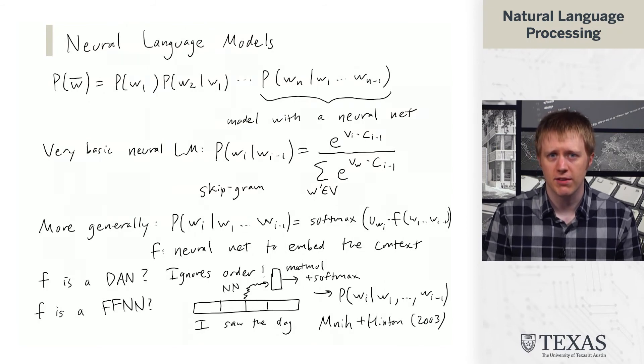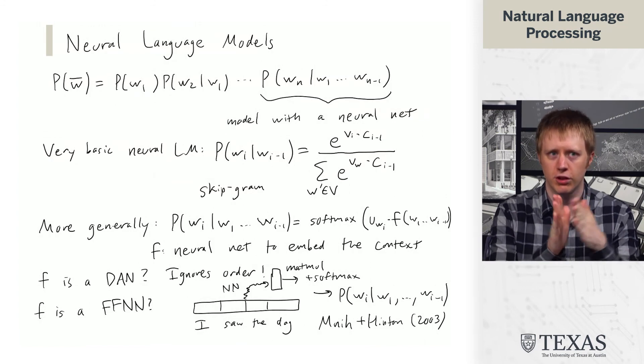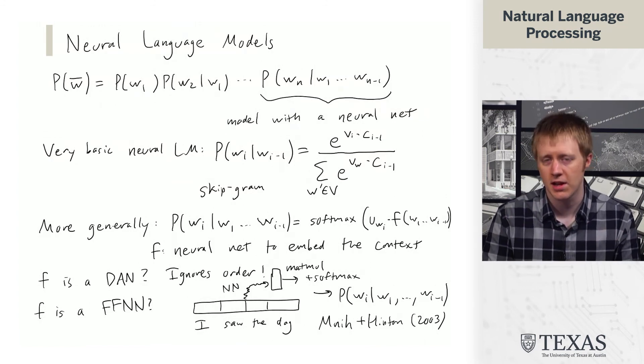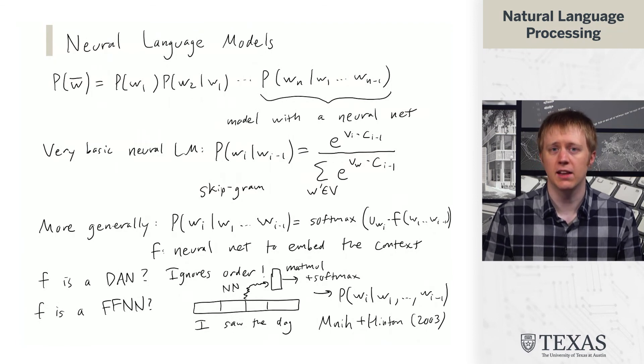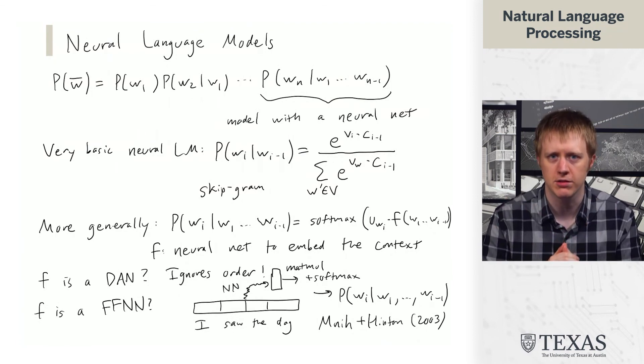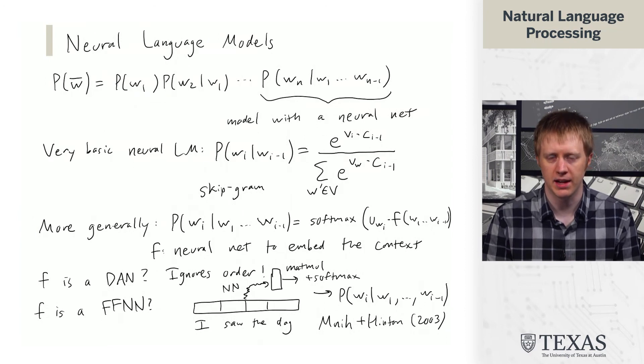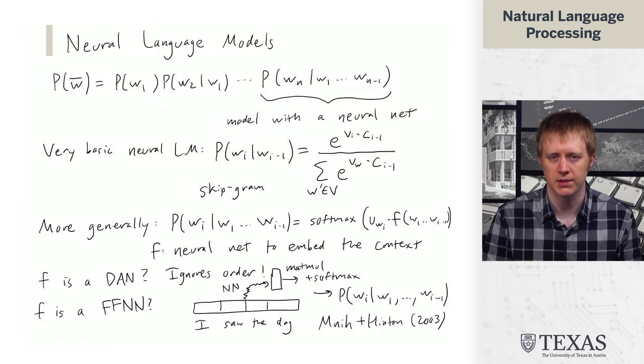And so that's going to be very useful here because we're going to be able to build models that can just look at arbitrarily long contexts. It may not use all the context, but that's okay. It at least theoretically scales to be able to use it all without running into the computational problems that n-gram LMs and these sorts of feed-forward neural network-based LMs give.